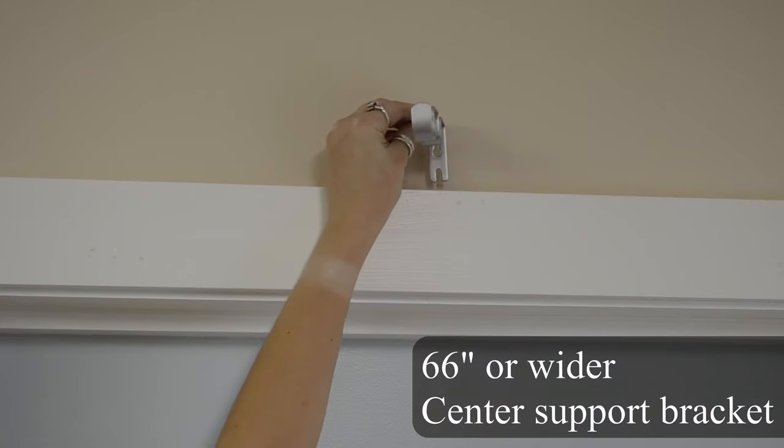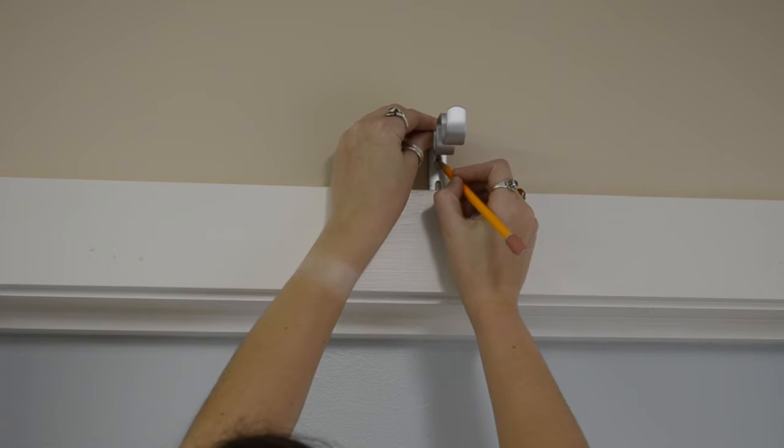If your rod will be extended above 66 inches, then a third bracket will be required. Measure halfway between your end brackets and hold the bracket into place to mark the screw hole locations.